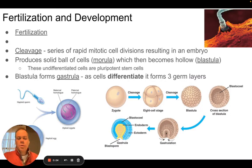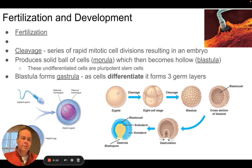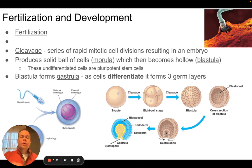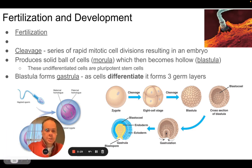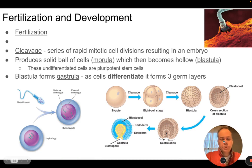We've talked about the anatomy and function of the male and female reproductive structures. Now we're going to talk about the process of fertilization, development of the embryo, and eventually childbirth. We already talked about meiosis, which is the type of cell division that takes diploid cells — cells that have pairs of chromosomes — and produces haploid cells that have half the number of chromosomes, called gametes or sex cells.